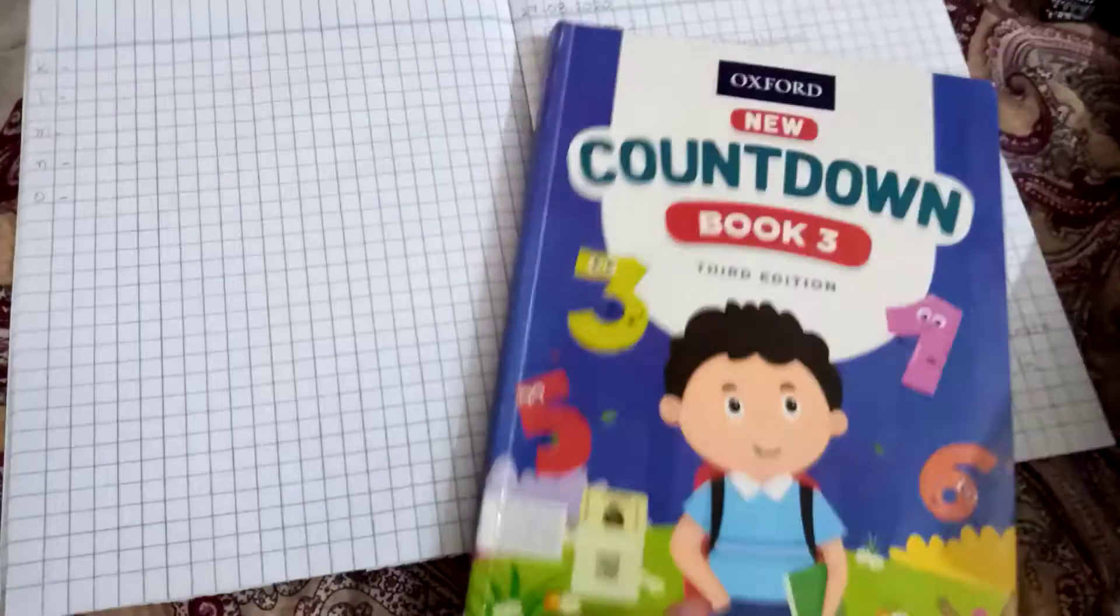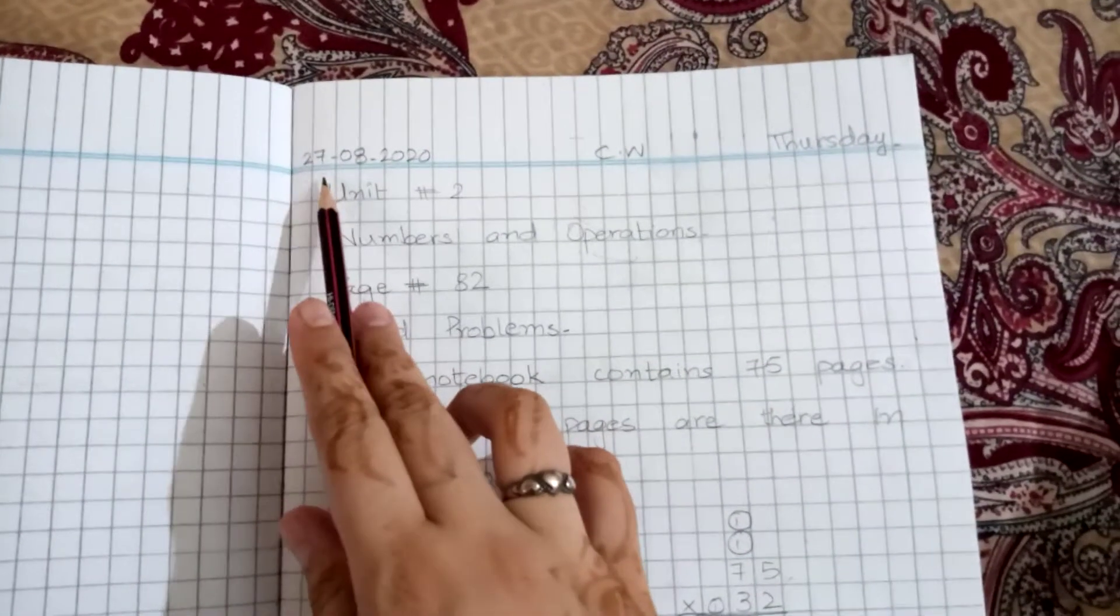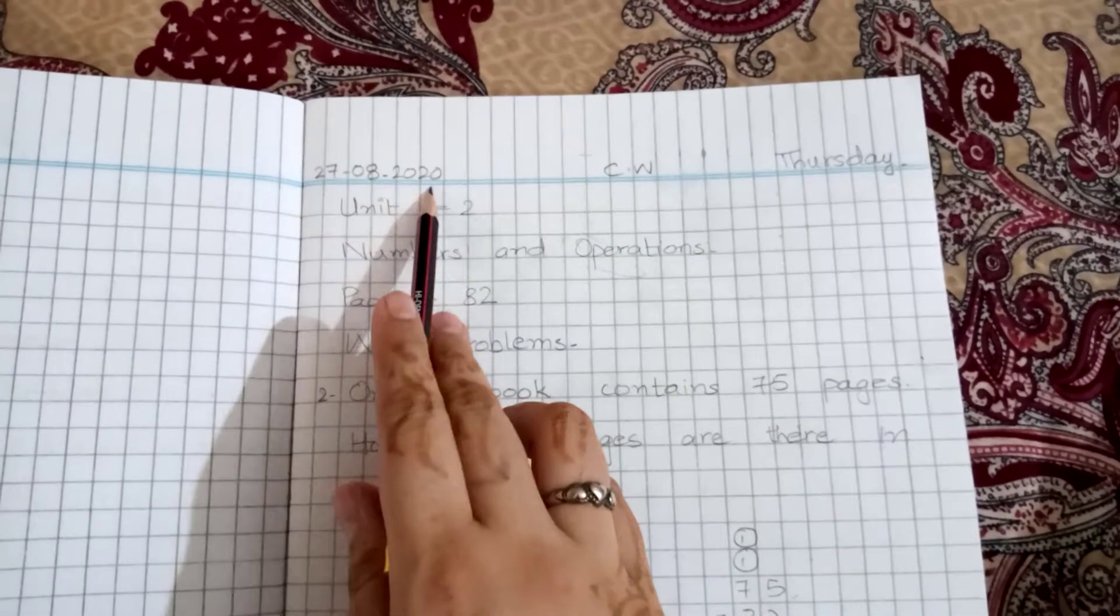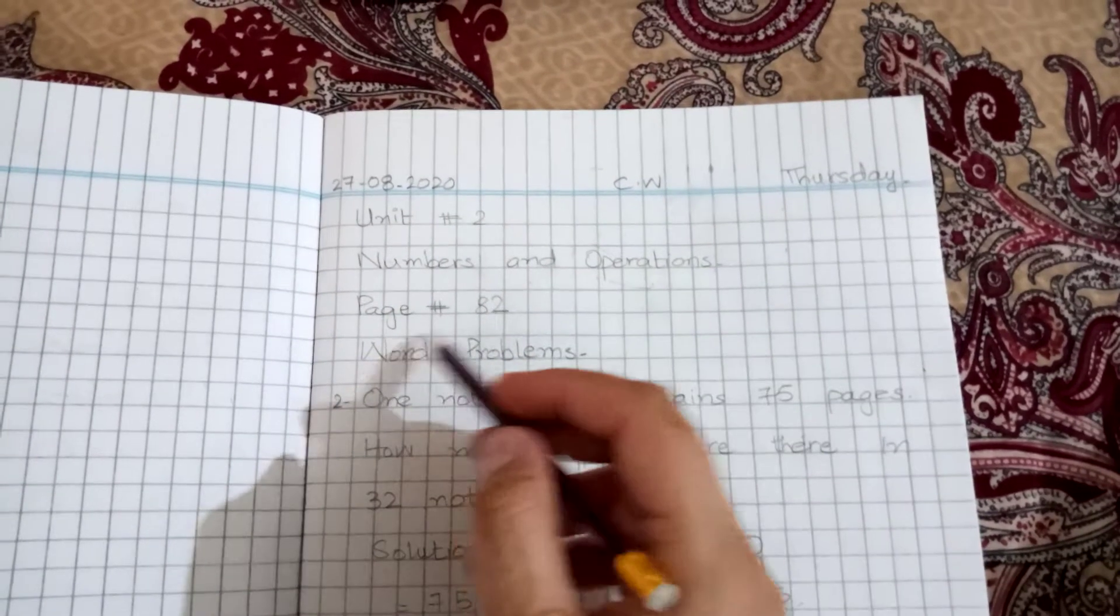Let's take out the notebook as I have already prepared the notebook for you. Page number preparation: 27-8-2020, class book on Thursday, unit number 2: Numbers and Operations, page number 82, Word Problems Part 2.